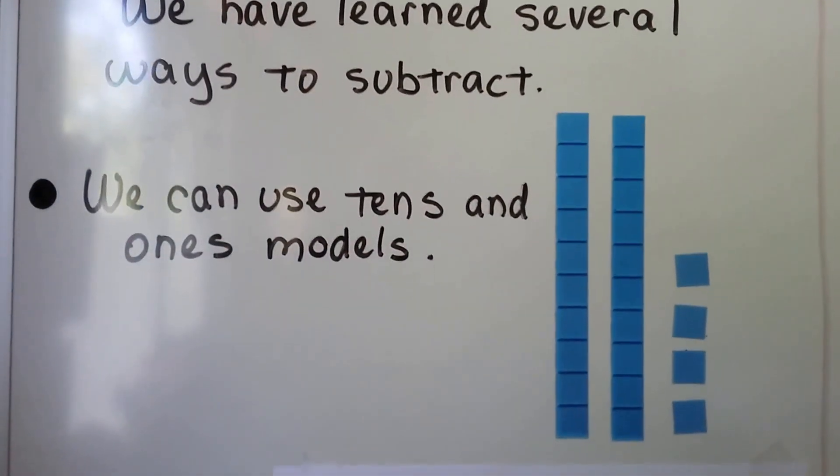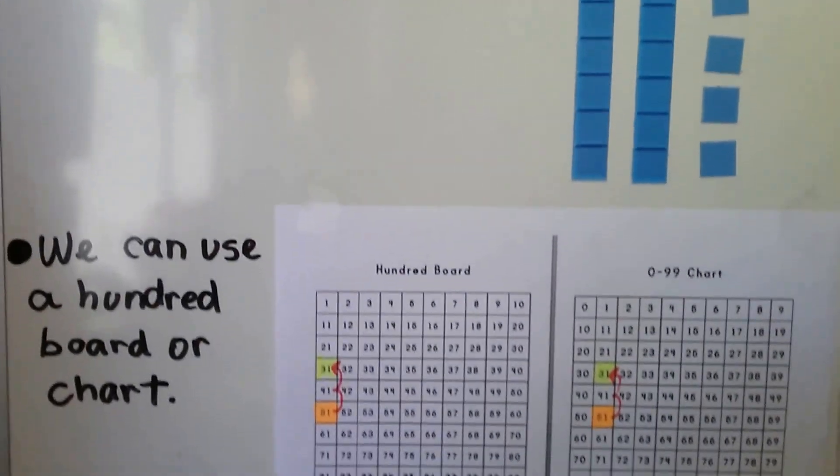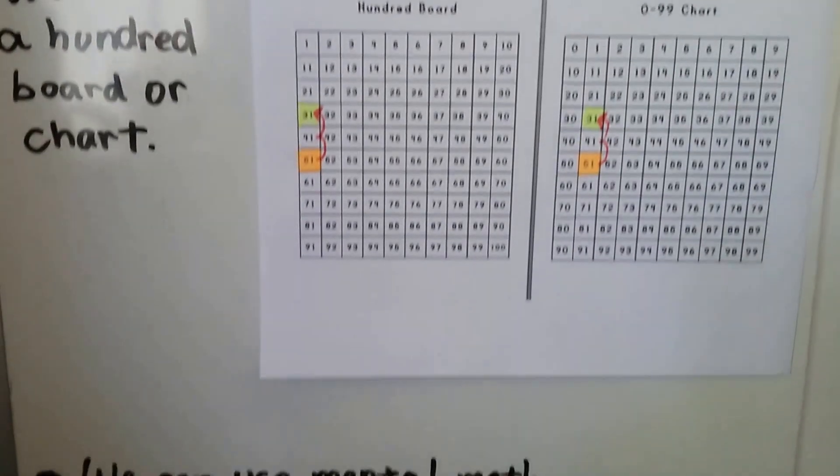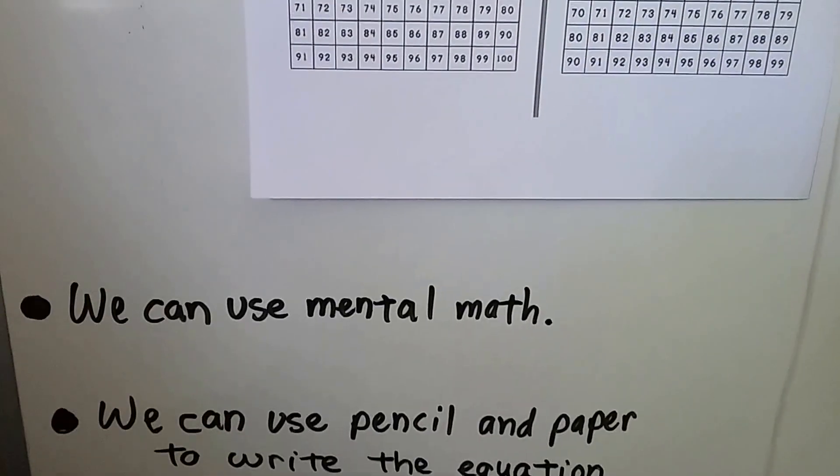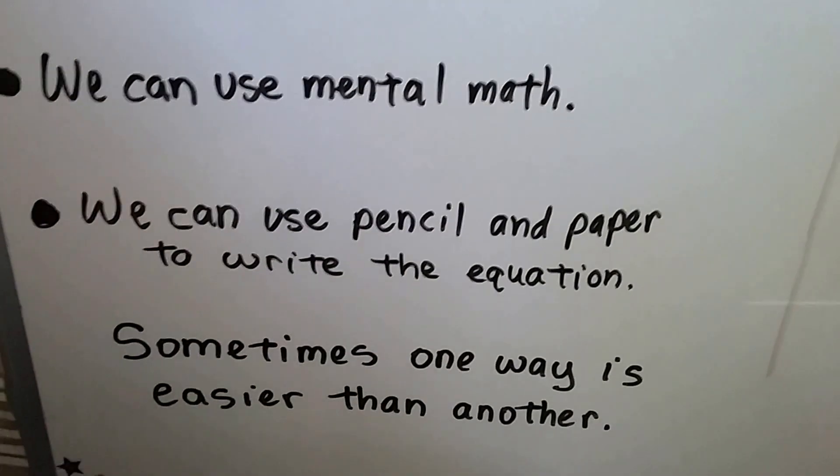We can use tens and ones models. We can use a hundred board or chart. We can use mental math and think of it in our head and come up with an answer. We can use pencil and paper to write the equation.